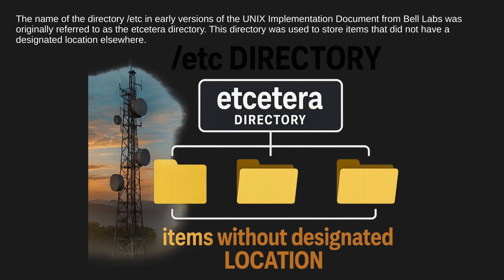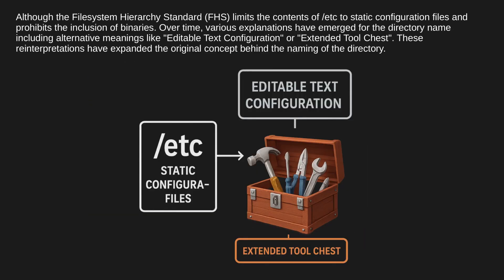The name of the directory /etc in early versions of the Unix implementation document from Bell Labs was originally referred to as the 'et cetera' directory, used to store items that did not have a designated location elsewhere. Although the file system hierarchy standard limits the contents of /etc to static configuration files and prohibits the inclusion of binaries, over time various explanations have emerged for the directory name, including alternative meanings like 'editable text configuration' or 'extended tool chest.' These reinterpretations have expanded the original concept behind the naming of the directory.